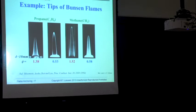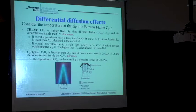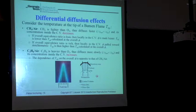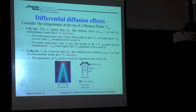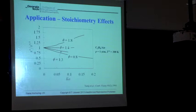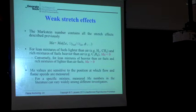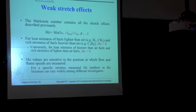Going back to our phenomenological analysis: a lean hydrogen mixture corresponds to a negative Markstein length; a rich hydrogen mixture has a positive Markstein length. Propane is opposite. For lean mixtures of fuel lighter than air (hydrogen, methane) or rich mixtures of fuels heavier than air (propane), you have a negative Markstein length. I invite you to verify this tonight by working back through the analysis.